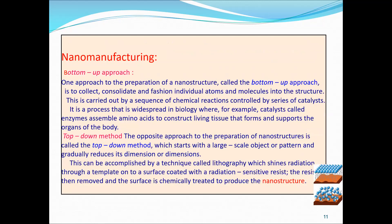There are two types of nano manufacturing methods. The bottom-up approach collects, consolidates, and fashions individual atoms and molecules into a structure through a sequence of chemical reactions controlled by catalysts — a process widespread in biology, where enzymes assemble amino acids to construct living tissues forming the organs of the body.